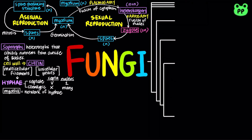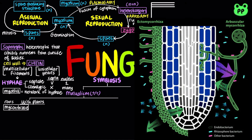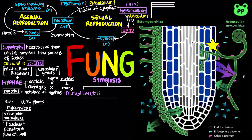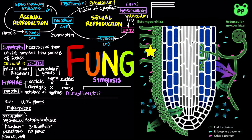Fungi engage in various symbiotic relationships with other organisms. Mycorrhizae refers to mutually beneficial symbiotic relationships between fungi and plant roots, and involves specialized hyphae. There are two types: arbuscular mycorrhizal fungi contain specialized hyphae known as haustoria, which penetrate through the cell walls of root cells and into tubes formed by invagination of the root cell membrane. Ectomycorrhizal fungi form sheets of hyphae over a root and grow into the extracellular spaces of the root cortex, but do not penetrate plant cells.